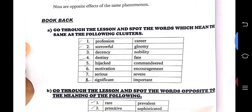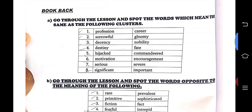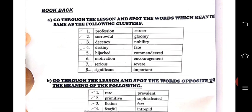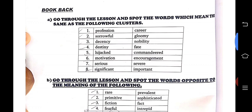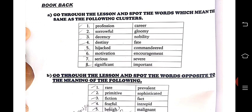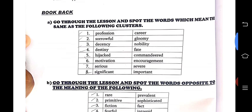Now let's start with the book back. In the third unit they have given synonyms and antonyms in the vocabulary section. The first is: profession — career; sorrowful — gloomy; decency — nobility; destiny — fate. These are all synonyms. And then hijacked — commandeered, meaning to take possession of something by force. Motivation — encouragement. Serious — severe. Significant — important.